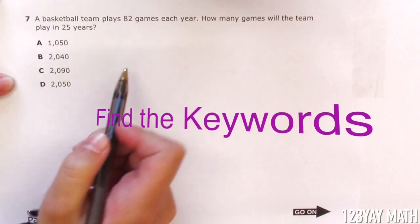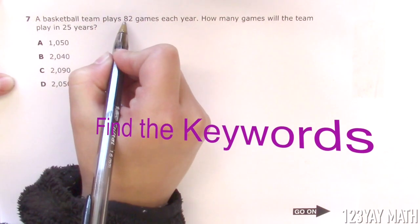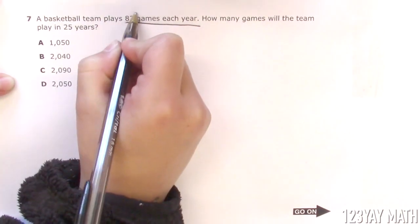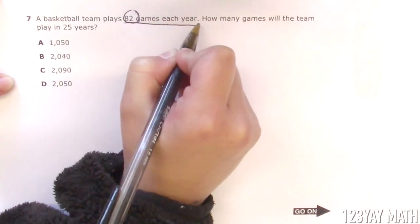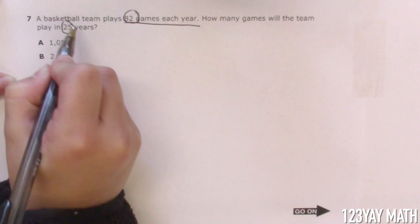Now we're going to look for our keywords. A basketball team plays 82 games each year. We are going to circle the 82 and underline games each year. How many games will the team play in 25 years?